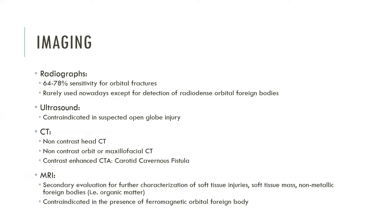Orbital radiographs only have a 64 to 78 percent sensitivity for fractures and are rarely performed nowadays other than for orbital metallic foreign body detection. CT of the orbits without contrast is the initial imaging modality of choice for evaluation of orbital trauma, as it is readily available, offers superior spatial resolution, and can be performed rapidly. A non-contrast head CT may be the only orbital imaging ordered for a trauma patient, so it's important to not forget the orbits when reading trauma head CTs.